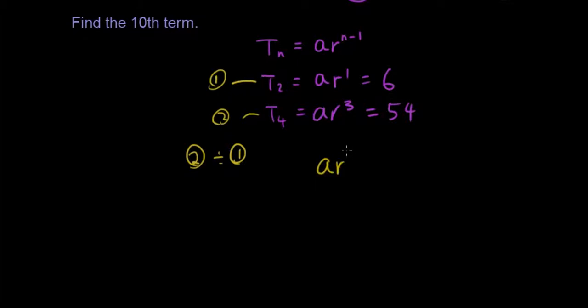So ar^3 divided by ar^1 equals 54 divided by 6. 6 times 9 is 54, and a divided by a cancels out, so r^3 over r^1 gives us r^2. r^2 equals 9, so r is therefore 3.